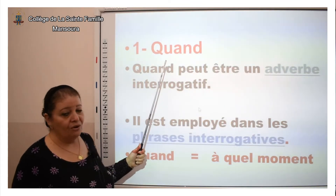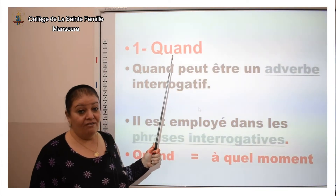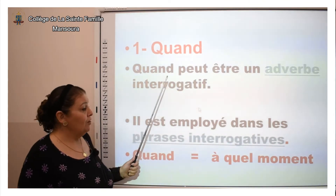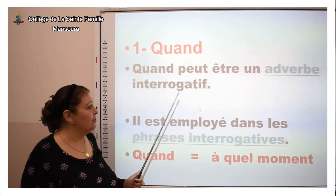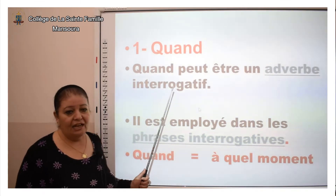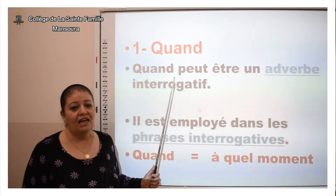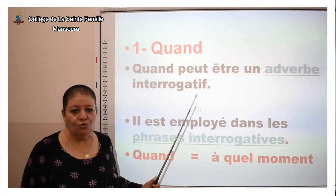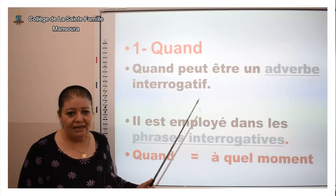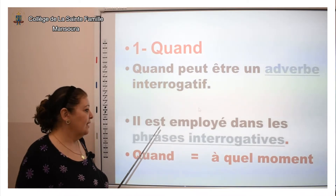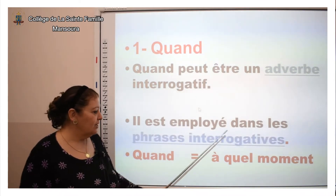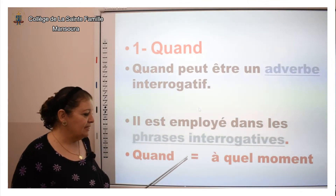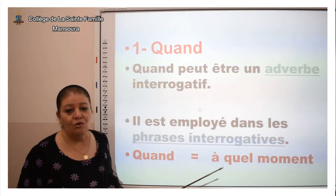Numéro un : « quand » avec D. « Quand » avec D est très connu pour nous. « Quand » peut être un adverbe interrogatif, c'est-à-dire un mot interrogatif comme « où », « pourquoi », « qui », « comment ». Il est employé dans les phrases interrogatives. « Quand » signifie : à quel moment.